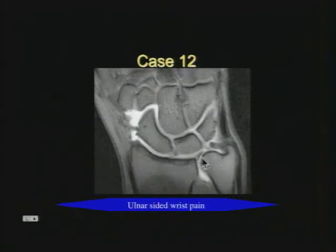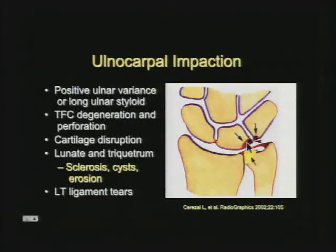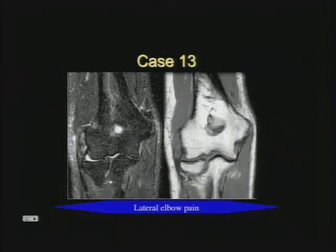In ulnocarpal impaction syndrome, the ulna has positive ulnar variance — one millimeter longer than the radius or more. The ulnar head hits on the lunate and triquetrum, causing triangular fibrocartilage tears, lunotriquetral ligament tears, and sometimes abnormal marrow signal in that corner. Treatment is ulnar osteotomy to shorten it, resection of the ulnar head, or lengthening the radius.